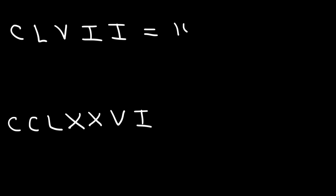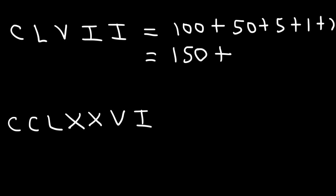Now let's try two more using larger numbers: CLVII and CCLXXVI. For CLVII, C is 100, L represents 50, V is 5, and I is 1. So we have 100 plus 50, that's 150. Then 5 plus 1 plus 1 is 7. So this turns out to be 157.